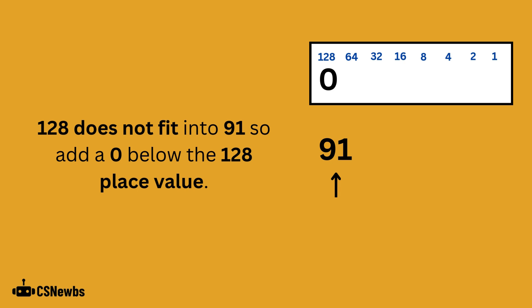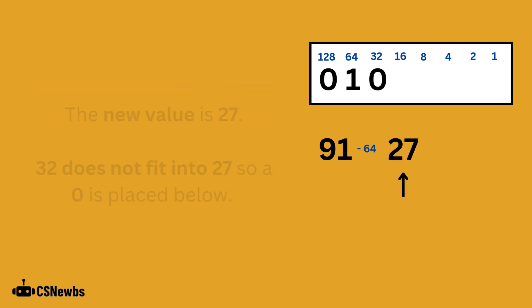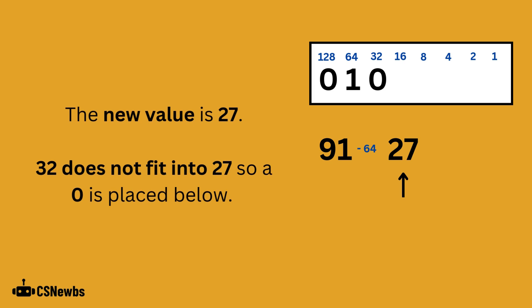The place value of 128 does not fit into 91, so we will add a 0 beneath 128. 64 does fit into 91, so we put a 1 below the 64 place value. Now that we've written a 1, we must subtract that place value from the denary number. 91 take away 64 gives us 27, which is the new value that we will compare to the place values. 32 does not fit inside of 27, so we write a 0 below the 32 place value.